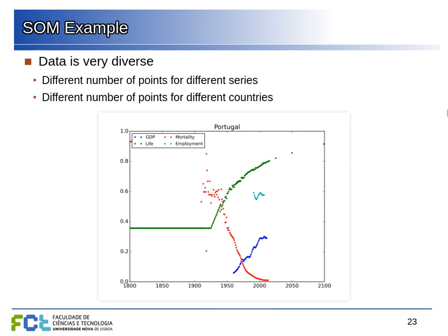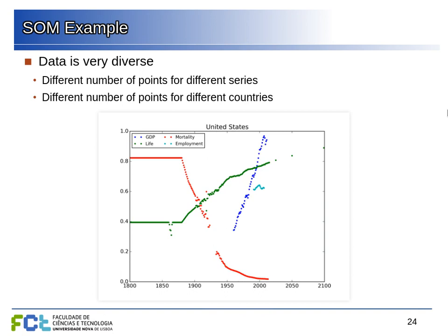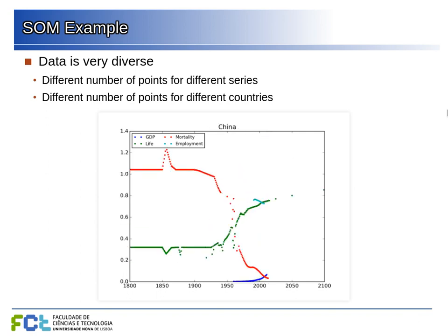For Portugal, for example, in green is life expectancy with estimates before around 1940 and then measured values. In red is infant mortality, and there's GDP data only for a partial range. Employment rate data is just a small fraction. All values are normalized so they can be plotted on the same scale. The United States has different amounts of data points. Since we want to characterize each country by these indicators, we need to extract features and organize everything into a fixed number of values.